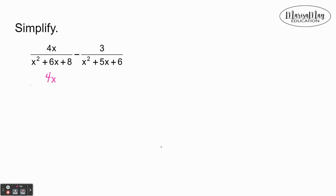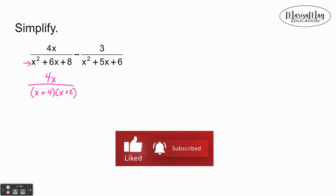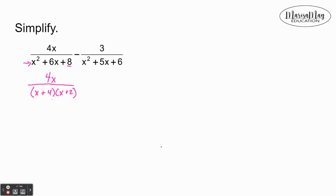that first fraction and factor its denominator. I've got x² + 6x + 8 and I'm going to factor that to (x + 4)(x + 2). So I ask myself what two numbers would multiply to give me 8 but would add to give me 6, and that was my 4 and 2.